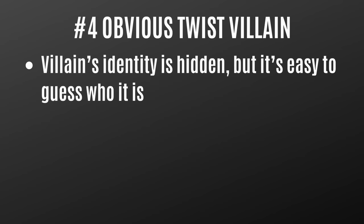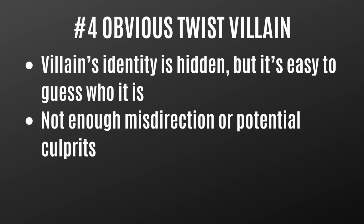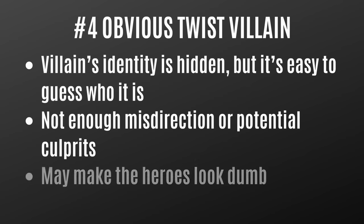The fourth type of bad twist is the obvious villain twist — when the villain's identity is hidden but it's easy to guess who it is. Usually there's not enough misdirection or not enough potential culprits, and this twist may make the heroes look dumb for not figuring out the truth sooner.